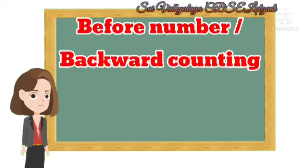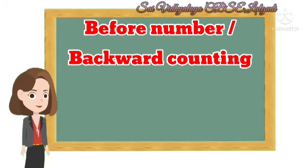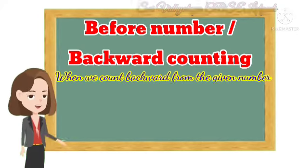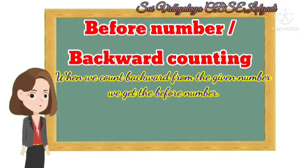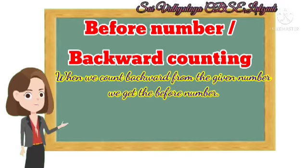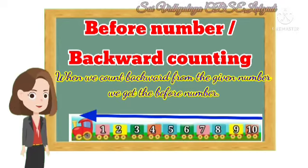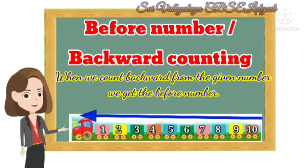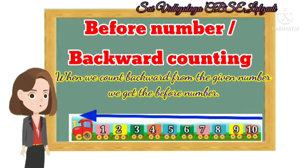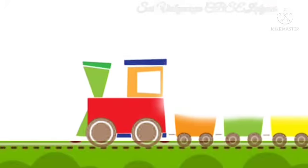Now tell me what is mean by before number? When we count backward from the given number, we get the before number. That means if we count numbers from 10 to 1, it's called before number or backward counting. Now count the numbers from 10 to 1.